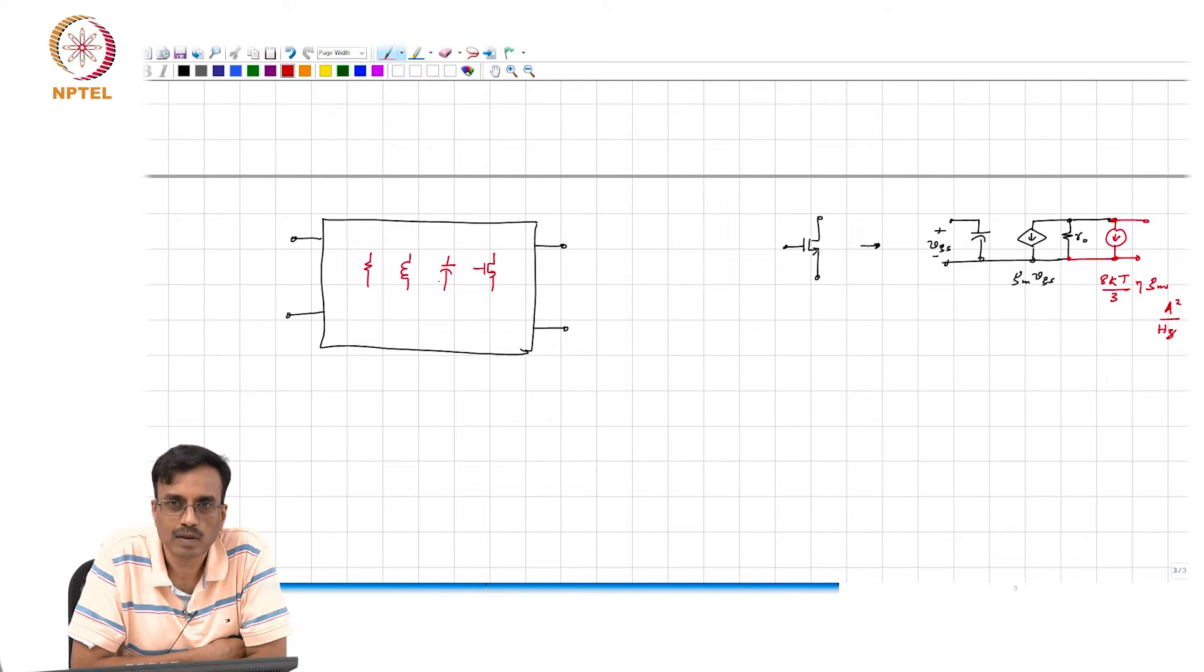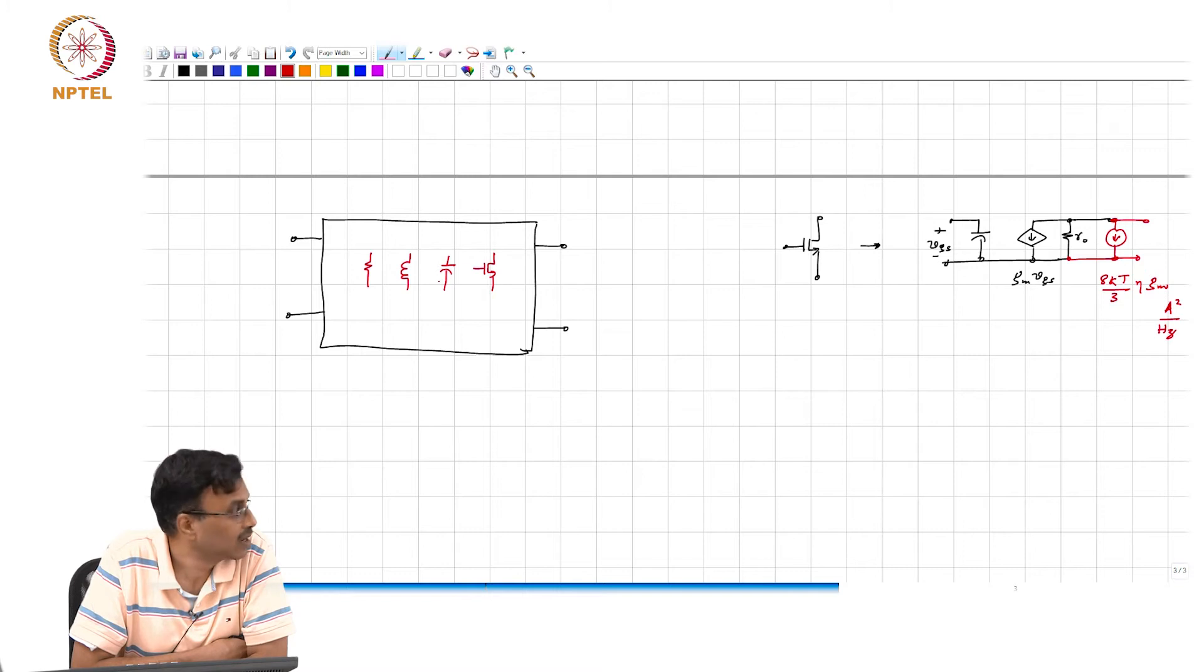And the question is, what happens? The output now not only consists of the input signal that is processed by whatever transfer small signal transfer function that the box has to offer, but also is accompanied by noise that the internal devices inside the box add to each of the branch currents and branch voltages.